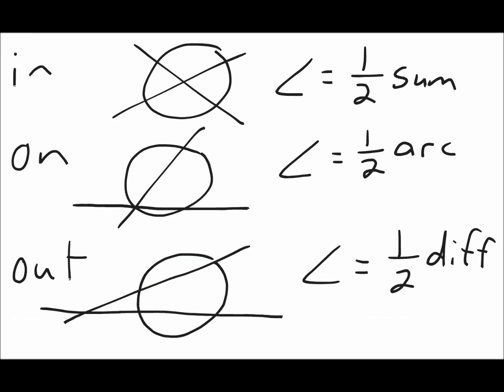When tangents and secants intersect a circle, they could either intersect inside the circle, on the circle, or outside of the circle. When they intersect inside the circle, to find the angle formed, you take the arc that the angle opens up to and the arc on the other side of the circle, and take half of the sum of those arcs.